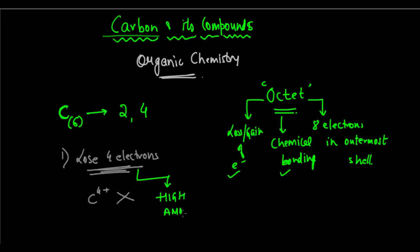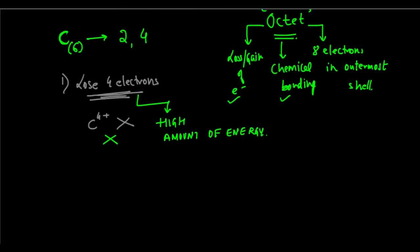This requires a lot of energy, so it is a problem. Since it requires so much energy, it's very difficult to obtain that amount of energy to remove the four electrons from the outermost shell. So usually carbon does not form a cation with 4+ charge.